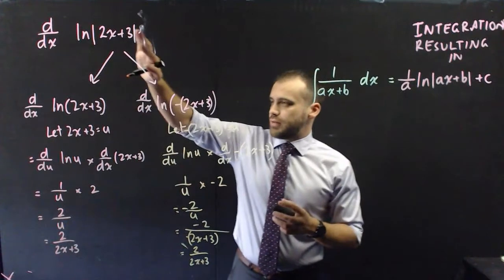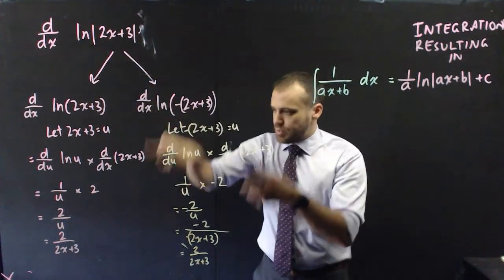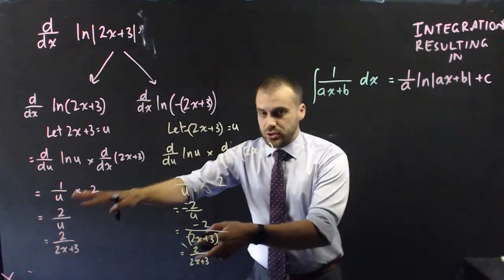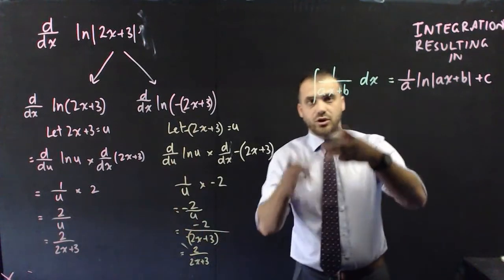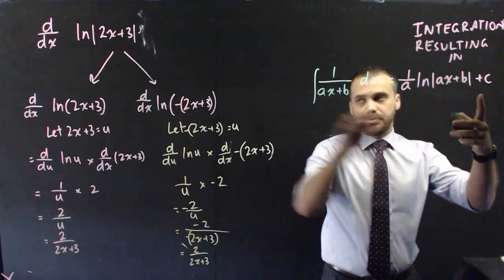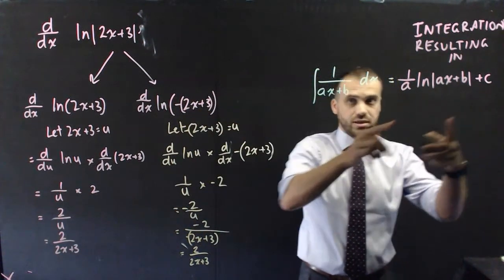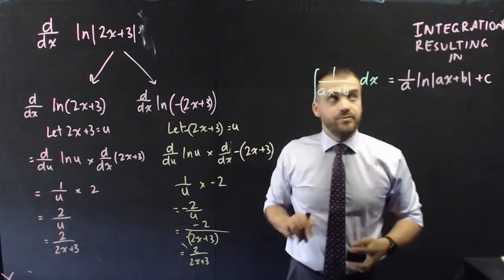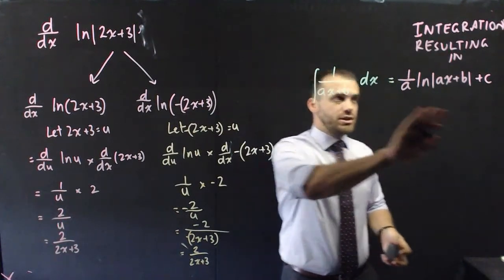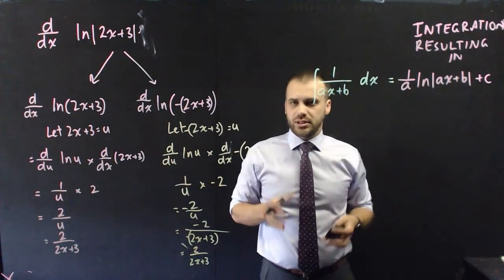This means that whether we have the positive case or the negative case, we end up in the same spot. And we can use this fact to go from here to there because what we did over there was go from there to there. All right. That's integration resulting in this wild formula there.